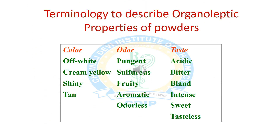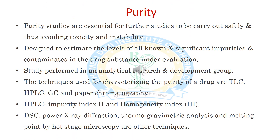Terminology used to describe the organoleptic properties of powders: color may be white, cream, yellow, shiny, tan, etc. Regarding odor, common descriptors include pungent and others. The second parameter is purity. Purity studies are essential for further studies to be carried out safely, avoiding toxicity and instability. They are designed to estimate the levels of all known and significant impurities and contaminants in the drug substance under evaluation.